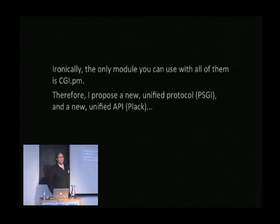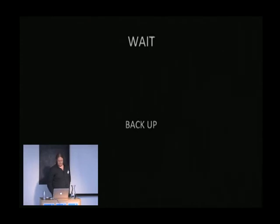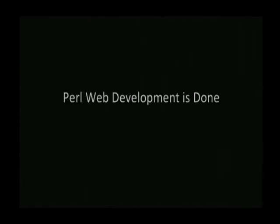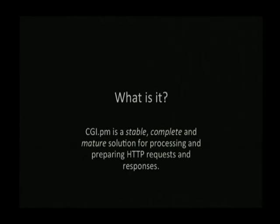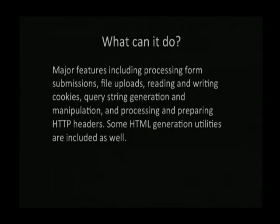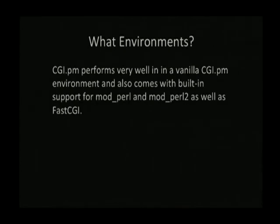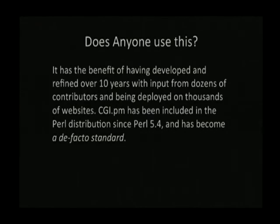Therefore, I propose that we should have a new protocol, PSGI, a new implementation, a new API — Plack. Wait a minute. You just said pro-web development is done. CGI.pm — it's in the core. It's a complete, stable, mature solution for processing and preparing HTTP requests and responses. Its features include form processing, file uploads, reading, writing, cookies. It also has some HTML generation utilities. It runs in all the environments. Does anyone use this? It's been developed for 10 years. All this is from the documentation of CGI.pm. De facto standard.